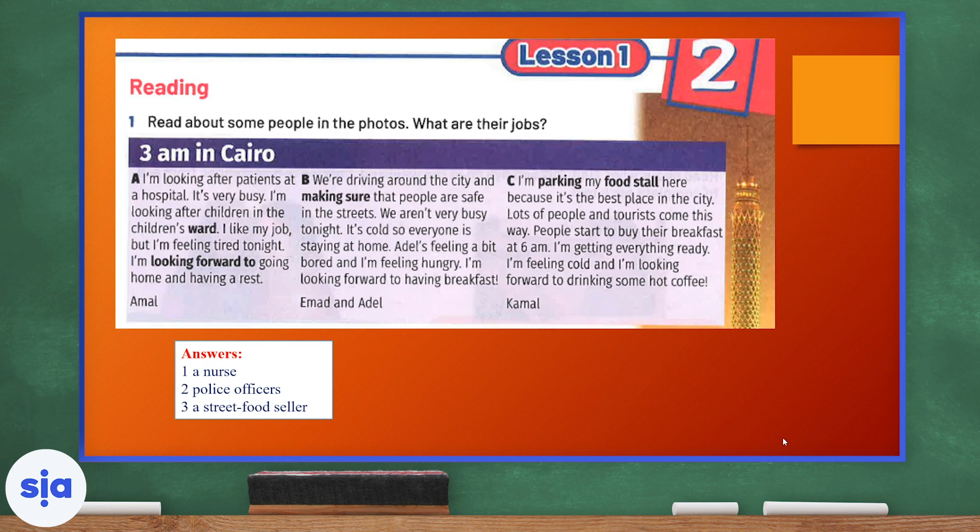Now, I want you to look at the words in bold. The first word we see is ward. The children's ward at the hospital is the children's department or location. If I say I'm looking forward to, it means I'm excited about or I can't wait for something specific to happen. If I'm making sure of something, I check that it is going well. Parking. If I'm parking, I'm placing my car or any form of transport at a specific place. A food stall is like a food cart that I use to cook my food in it.